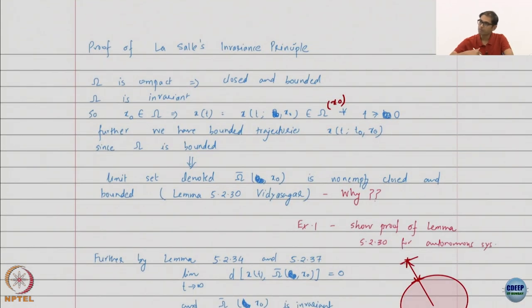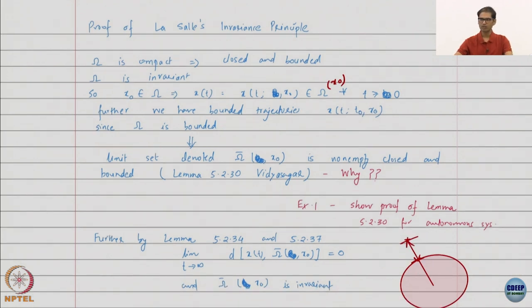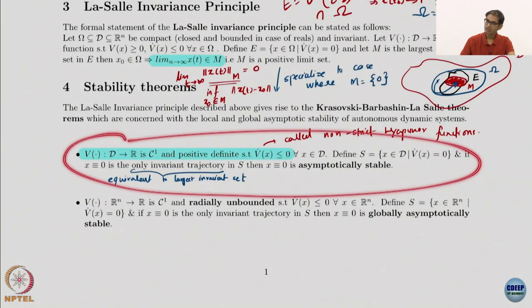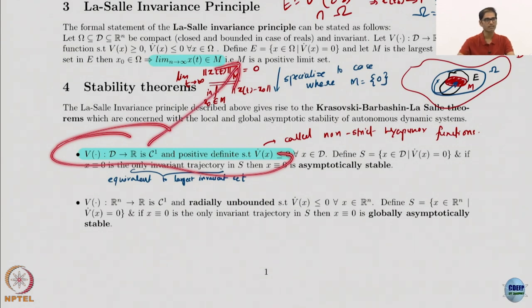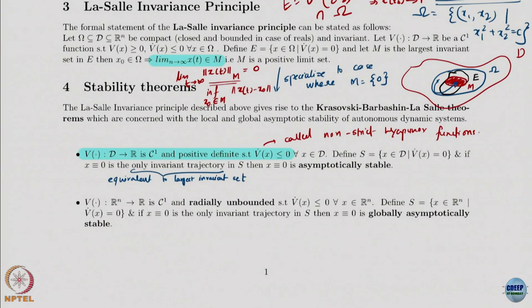Let's go back to the proof of the general LaSalle invariance principle — I'll start from the beginning. All terms have been defined so I won't redefine them. The proof of Barbashin-Krasovsky-LaSalle is a subset of this. If you satisfy the assumptions of Barbashin-Krasovsky-LaSalle, you definitely satisfy those of general LaSalle. The only extra thing is actually defining an omega set, which we already did in the pendulum example using V itself. Once zero is the only invariant set, zero becomes asymptotically stable.